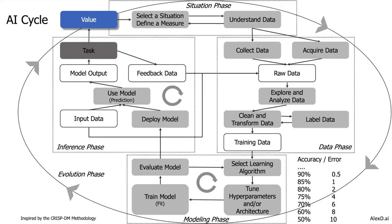The fifth and last phase is the evolution phase. Now, we decided at the beginning the situation, we collected the data, we built a model, we put the model in production, and we used that model in production. But at some point in time, we need to evaluate exactly the results of the tasks that use AI — whether they are producing, in fact, a value. We define a measure, and now is the time to really see if the outcomes of the task are producing the value that we defined previously.